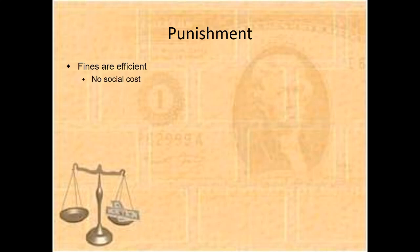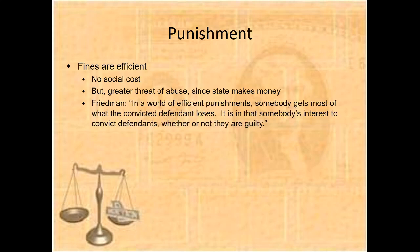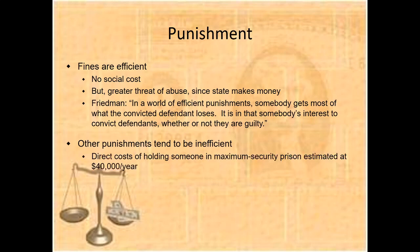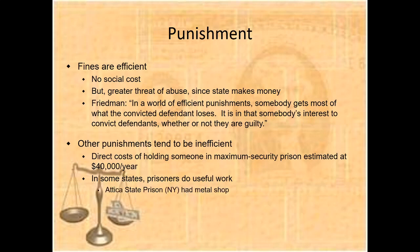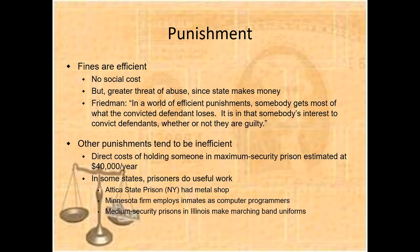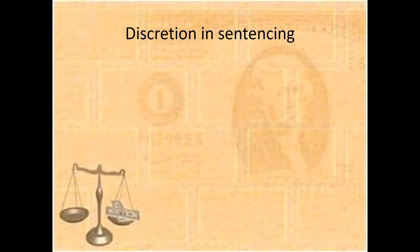Fines are efficient - there is no social cost, but there is a greater threat of abuse since the state makes money. As Friedman pointed out in the earlier lecture, in a world of efficient punishment, somebody gets most of what convicted defendants lose. So it is in that somebody's interest to convict defendants whether or not they are guilty. Other punishments tend to be inefficient. The direct cost of holding someone in maximum security prison is estimated at around $14,000 per year. In some states, prisoners do useful work - Attica state prison had a metal shop, a Minnesota firm employs inmates as computer programmers, and medium security prisons in Illinois make marching band uniforms.